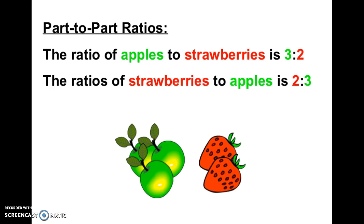Part-to-part ratios are shown in this picture below. The ratio of apples to strawberries is 3 to 2, and the ratio of strawberries to apples is 2 to 3.